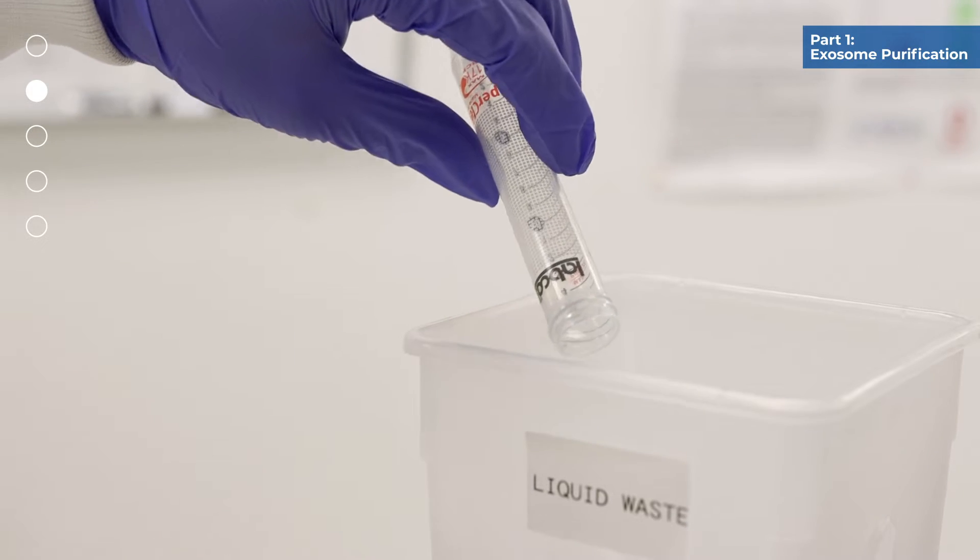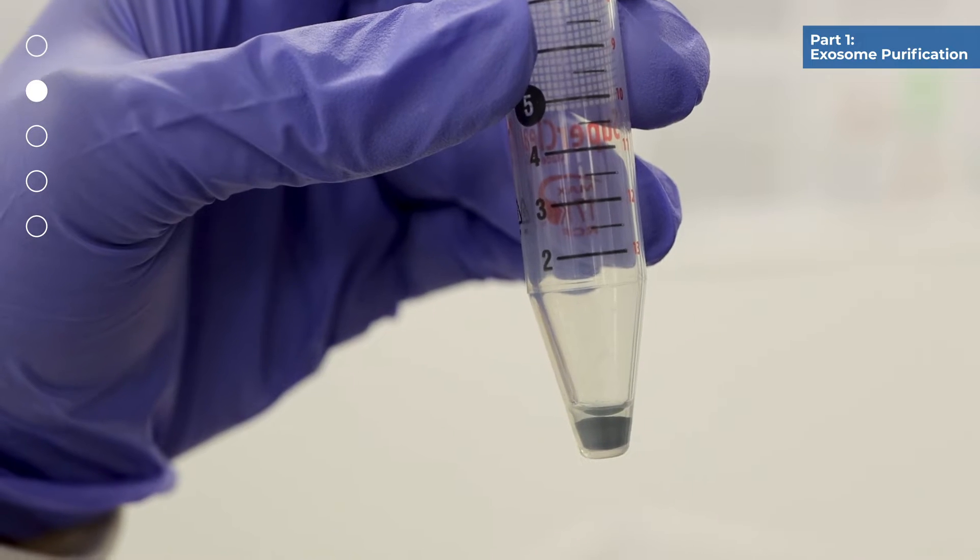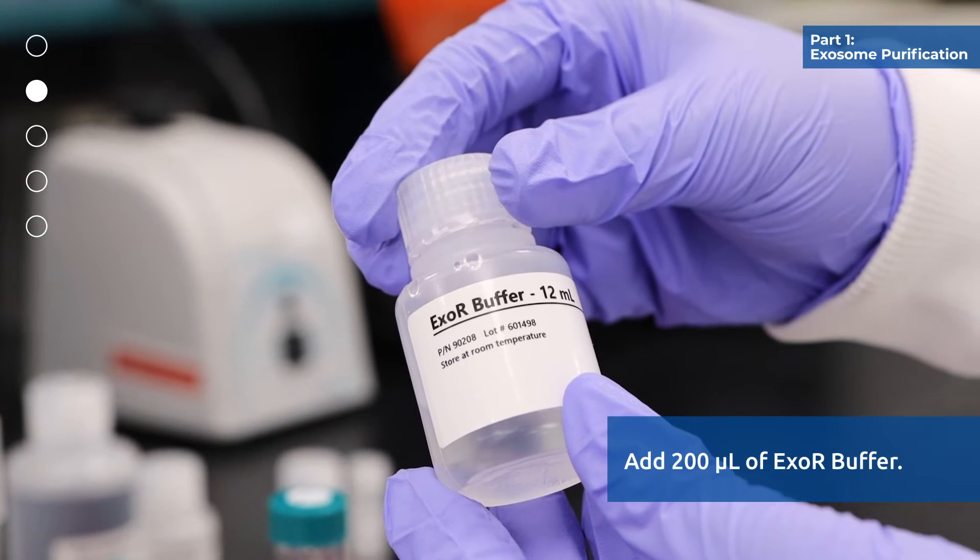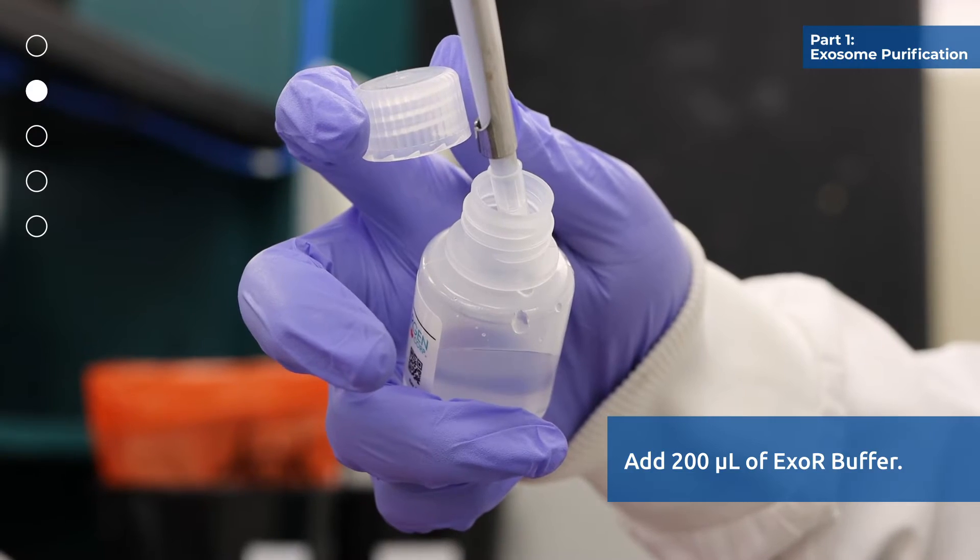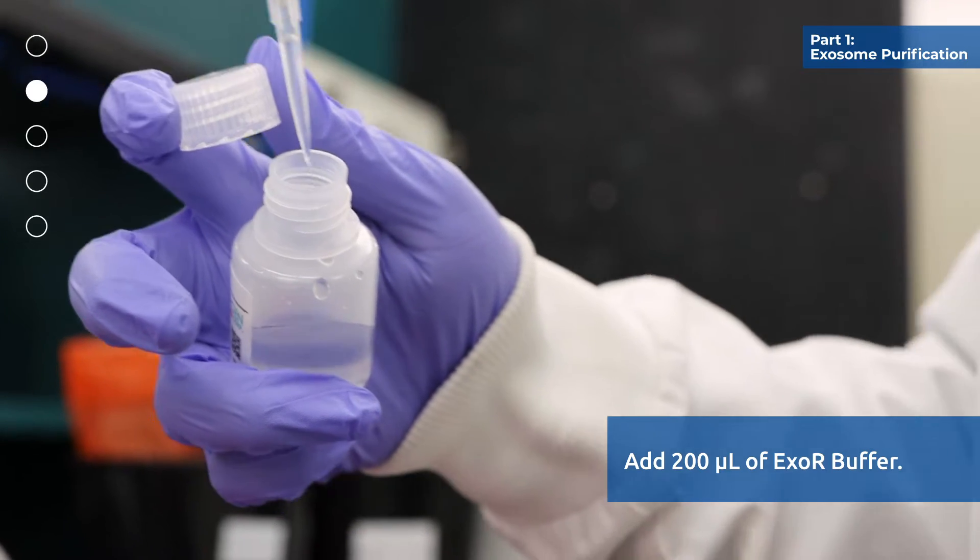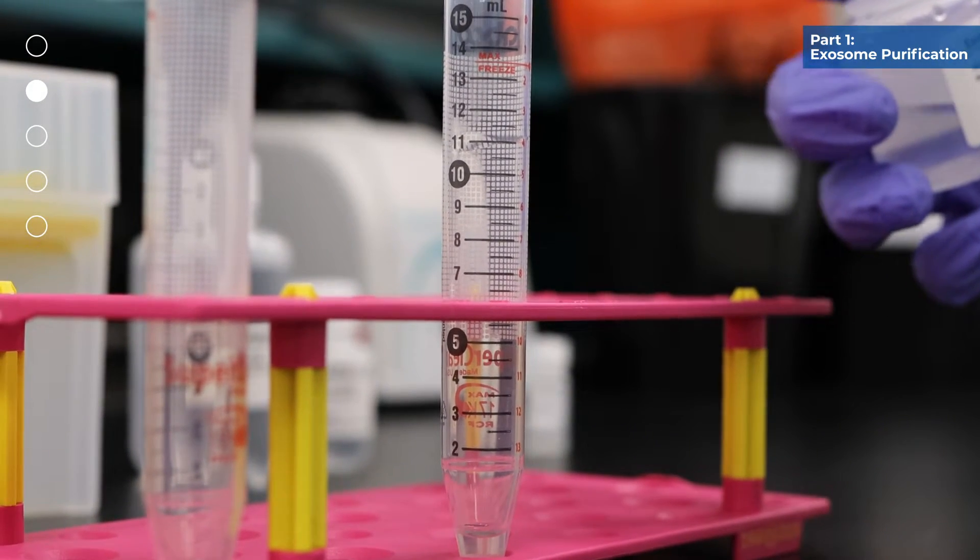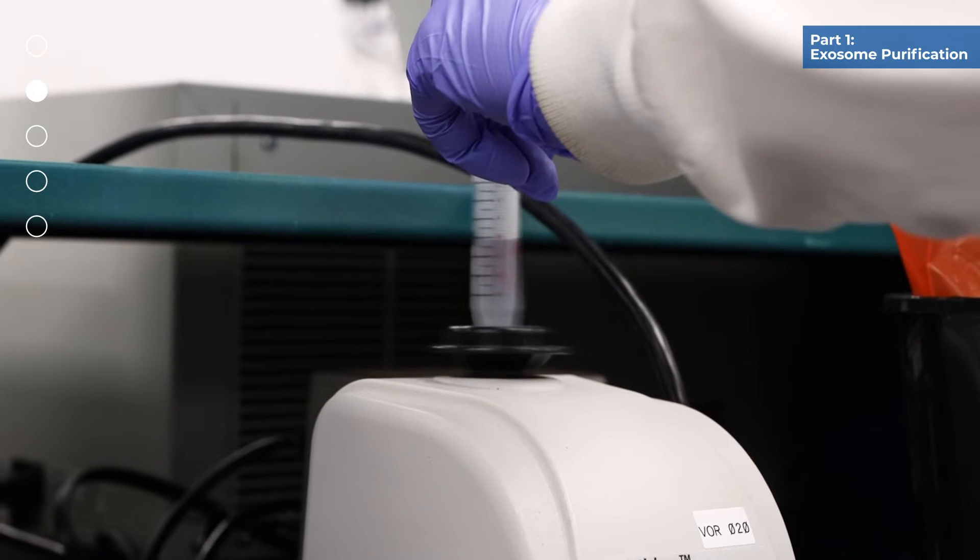Discard the supernatant. Apply 200 microliters of exo R buffer to the slurry pellet and mix well by vortexing for 10 seconds.